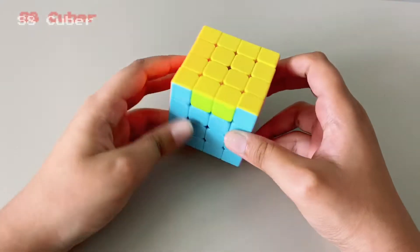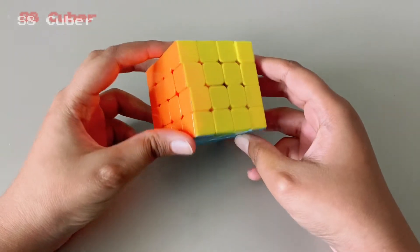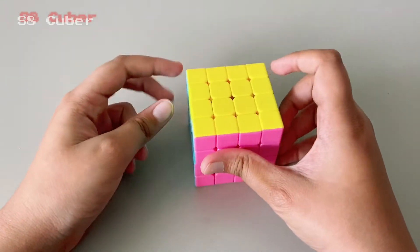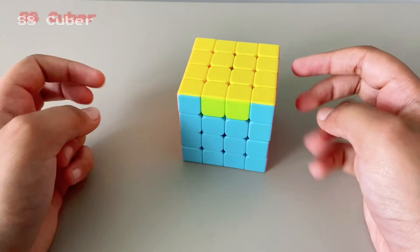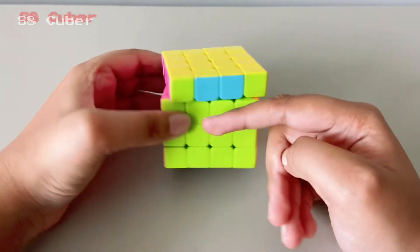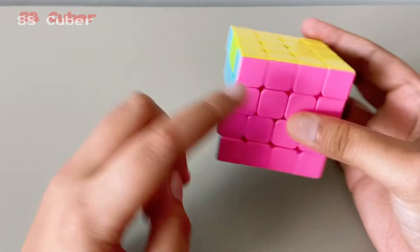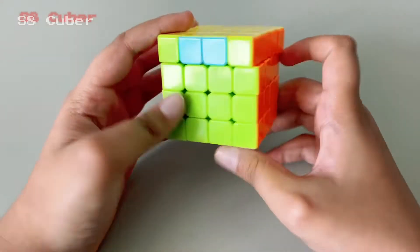Okay, so while solving the 4x4, you can also sometimes get a case like this where we have only two edges left, but these are on the opposite sides. See, this one is done, this one is done, and these two are not done.